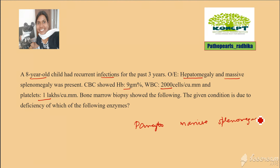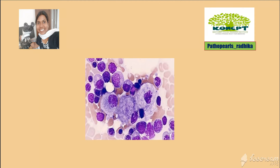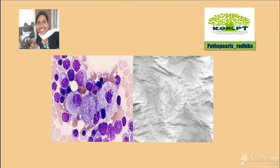The bone marrow biopsy finding is shown — what is it showing? When you look at these big cells, they are nothing but macrophages which are studded with some substance. This appearance is like that of a crumpled tissue paper appearance. So where do you get a crumpled tissue paper appearance?